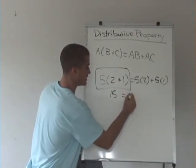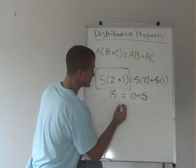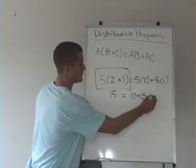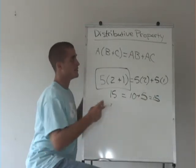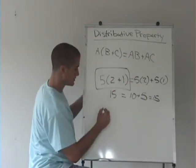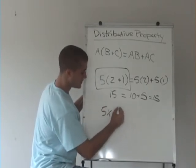5 times 2 is 10, plus 5 times 1 is 5. So 15 equals 15. And we can do that the other way also. If we have, say, 5x plus 8x.